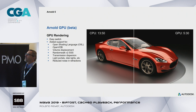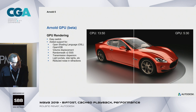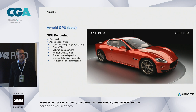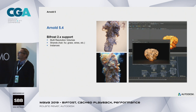The GPU rendering advantage is significant. This image was rendered on the left in almost 14 minutes on this machine, while the same quality with GPU rendering takes 5 minutes and 30 seconds. Depending on what GPU card you have in your machine, you can become even faster.